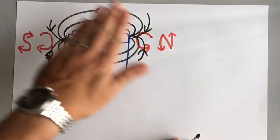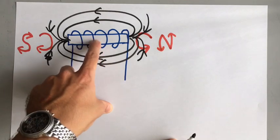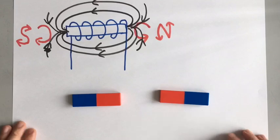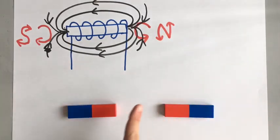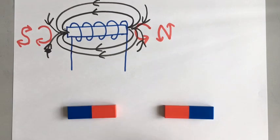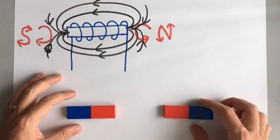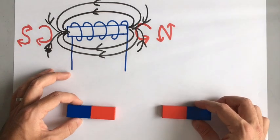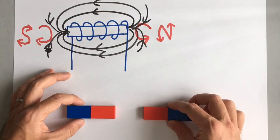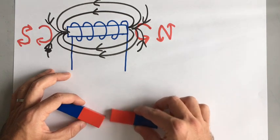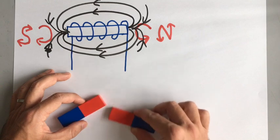A bar magnet has the same pattern of magnetic field as the coil of wire. Something interesting happens when you put a wire conducting electricity into an existing magnetic field — when a wire conducts electricity it creates a magnetic field around it, and if we put that wire in an existing magnetic field, it experiences a force. That's the same as when you move two magnets together — the magnetic fields interact and create a force.